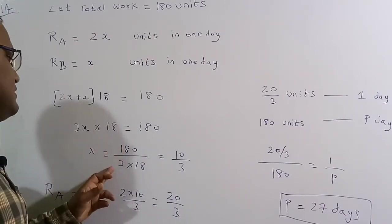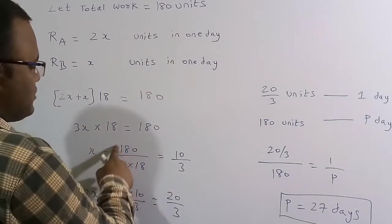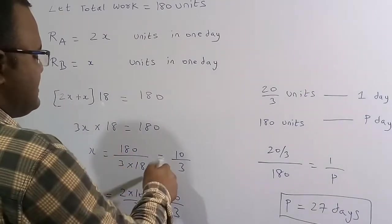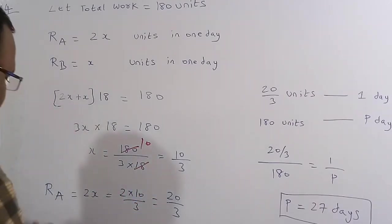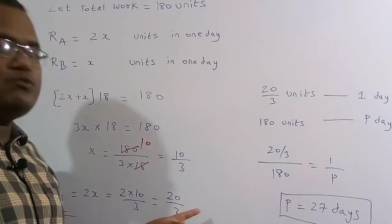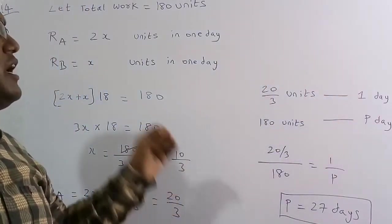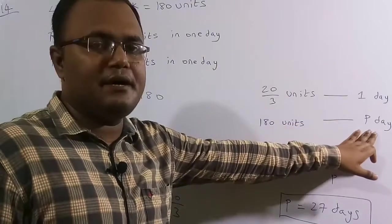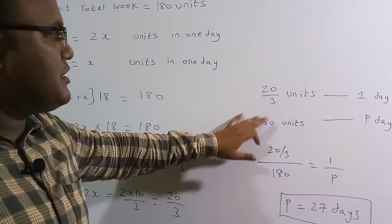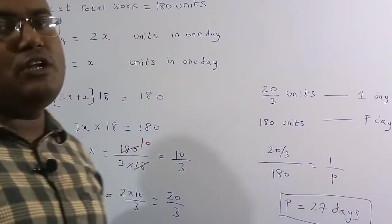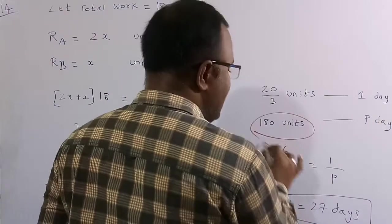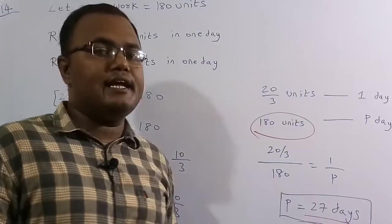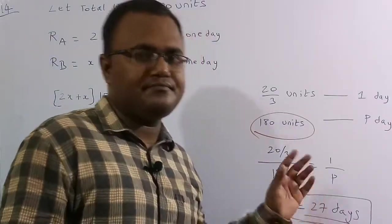A's rate = 2x = 2 × (10/3) = 20/3 units per day. To complete 180 units: days = 180 ÷ (20/3) = 180 × 3/20 = 27 days. Therefore person A alone can complete the total work in 27 days.